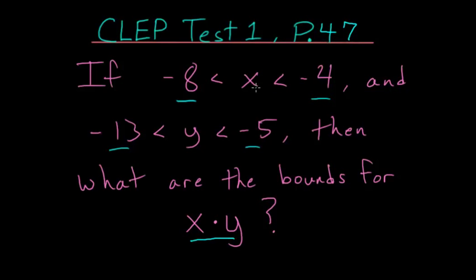Notice that both x and y are always going to be negative numbers. So if we take their product, a negative times a negative is just a positive number. And the highest possible value for x times y will be the product of their most negative numbers.